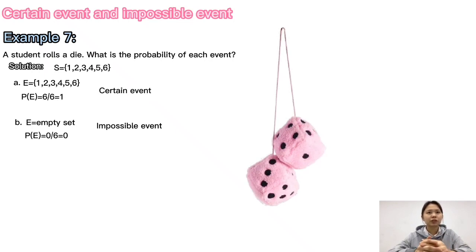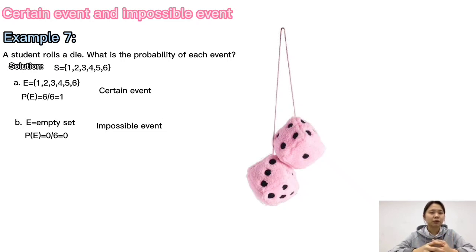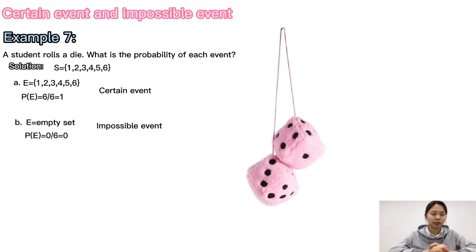For example, a student rolls a die. What is the probability of each event? A: The number rolled is less than 8. The sample space is S = {1, 2, 3, 4, 5, 6}. Every number in the sample space is less than 8, so the event is E = {1, 2, 3, 4, 5, 6}. Therefore, P(E) = 6/6 = 1, which means the event is a certain event.